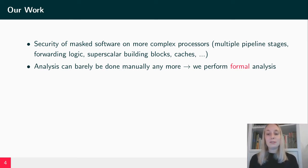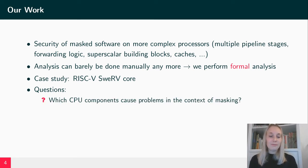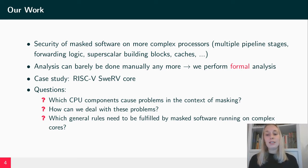We want to stick to a formal approach. In our case study we focus on the RISC-V Swerve core, which is exactly one core you would consider more complex. We focus on the following questions: which CPU components will cause problems in the context of masking, and how can we deal with these problems? Are there things we need to change in our software, and which things? Are there general rules we can apply to our software to get secure software on such complex cores?